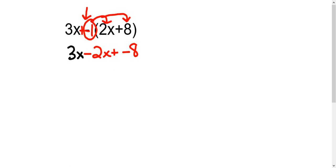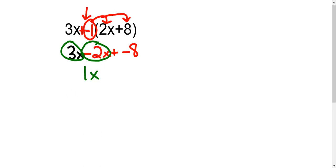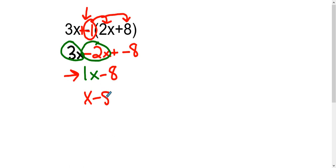After that I can combine like terms. Starting with 3x, its like term is negative 2x. So 3x minus 2x gives 1x, and then I bring down the constant. I will accept 1x as an answer, but the fully simplified answer is just x — 1x and x mean the same thing.